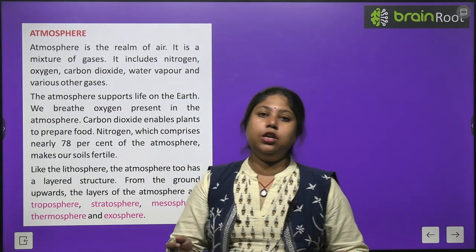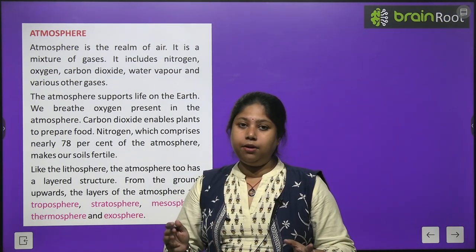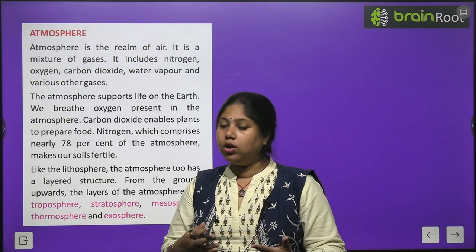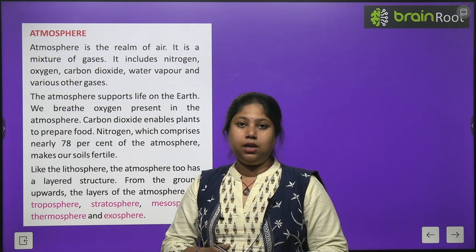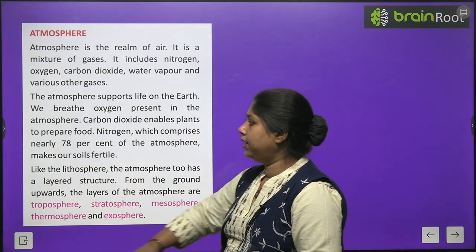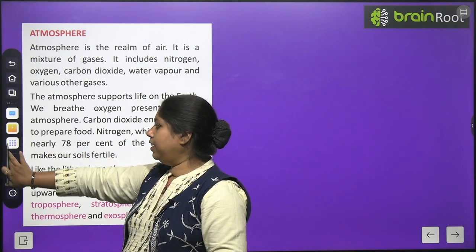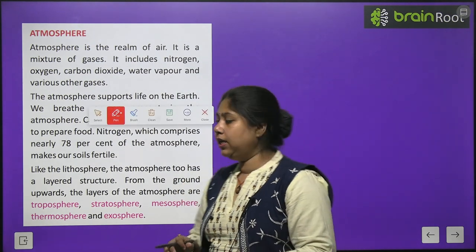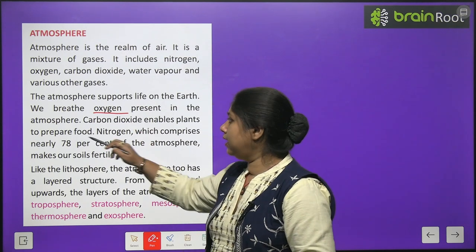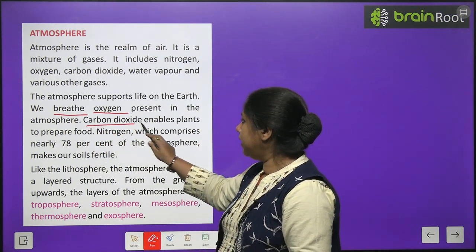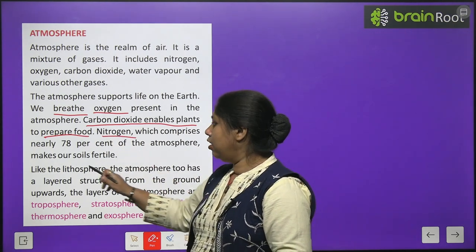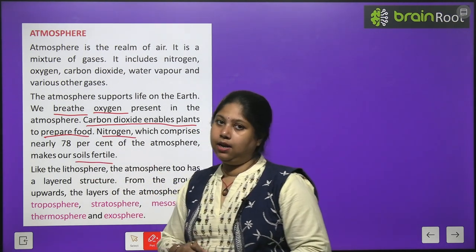Nitrogen, which makes up 78% of our air, is equally necessary — because nitrogen enriches our soil with minerals and makes it fertile. Every part of air is equally essential on Earth. Oxygen is used for breathing, carbon dioxide helps plants make food, and nitrogen makes the soil fertile.